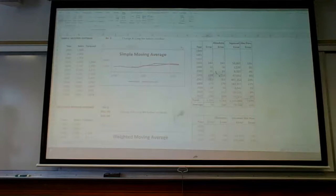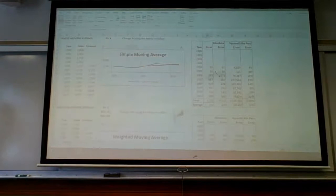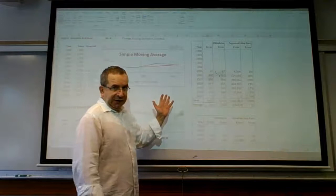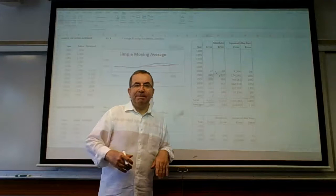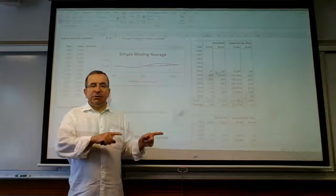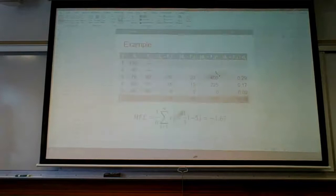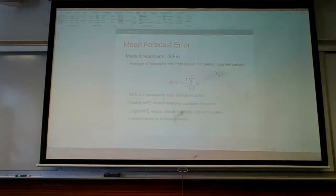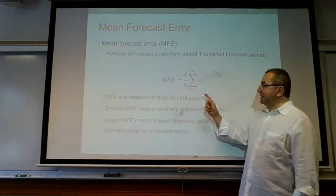As we increase N to 5, 6, 7, 8, our forecasts become more and more biased. Solely in terms of bias, N equals 2 is best. Now let's look at accuracy. Mean forecast error does not measure accuracy — it measures bias. It doesn't measure accuracy because positive and negative forecast errors cancel each other out.